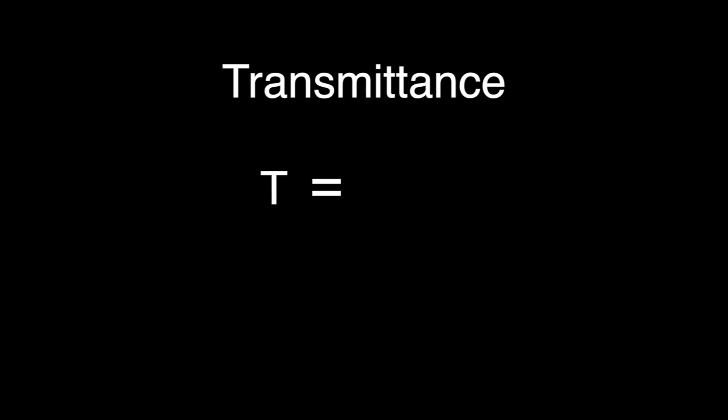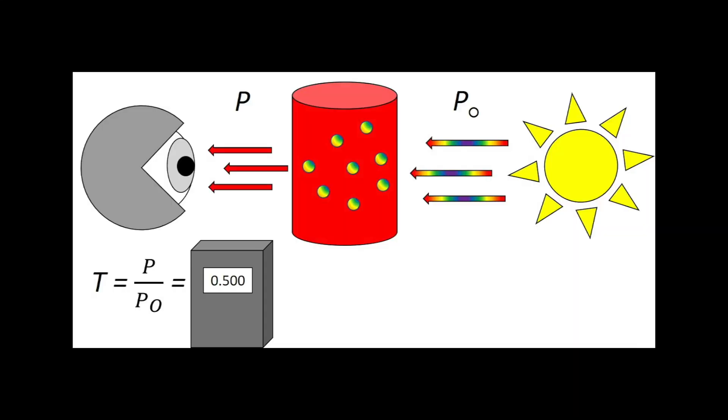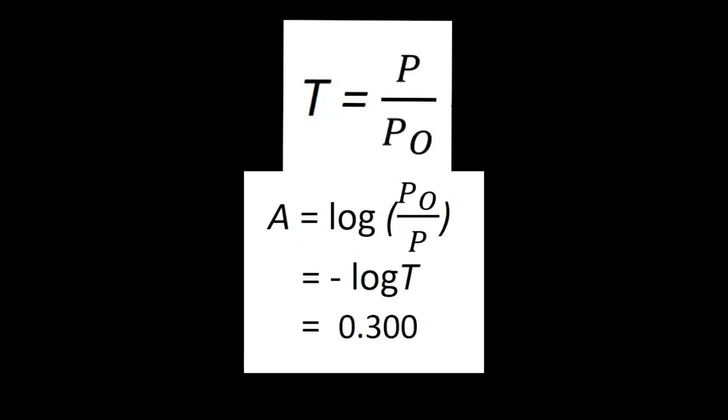By definition, transmittance T is equal to the ratio of light that passes through a sample, p, to the amount of light that is irradiated onto a sample, p sub o. By measuring the amount of light transmitted, the amount of light absorbed by a solution can be quantified, as the relationship is logarithmic. It is important to note that both transmittance and absorbance are unitless values.